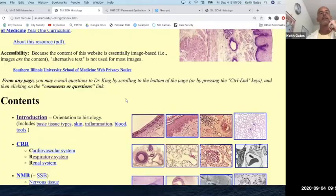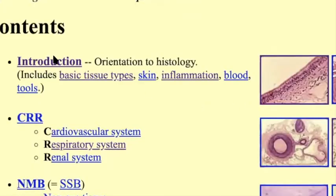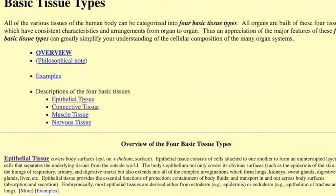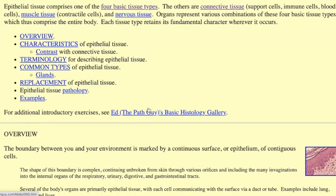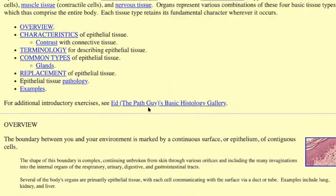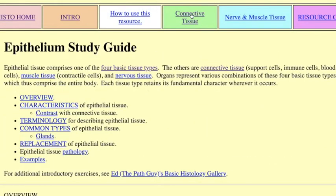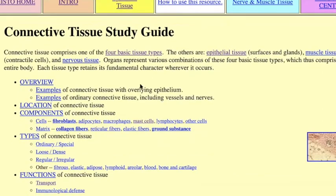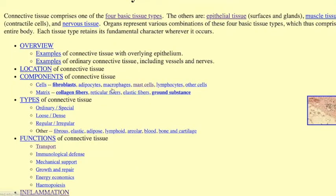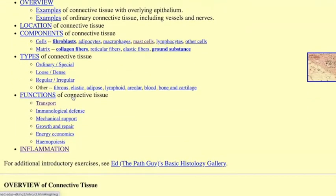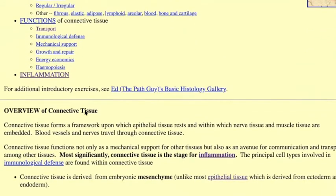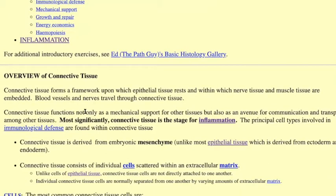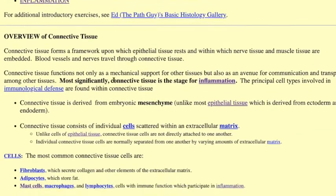There's a link on my page. You can go to the basic tissue types and click on any of them — for example, epithelial has a little study guide that provides more lecture-based content. But we're going to look at connective tissue, which gives an overview of locations, components, cells, types, and functions. For the lab, we'll go to histologyguide.org.